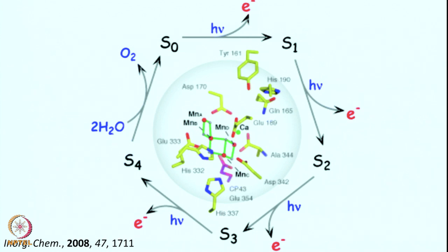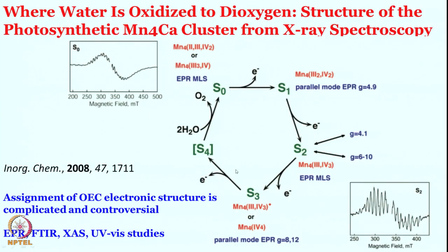One thing that is established throughout the literature is that S0, the fully reduced form, will be oxidized to S1, then to S2, then S3, and S4 — in each step one electron and one proton is involved. Overall, the fully oxidized S4 state will convert two molecules of water into oxygen. This is where we are mainly interested: what happens at S4 so that water can be converted to oxygen.